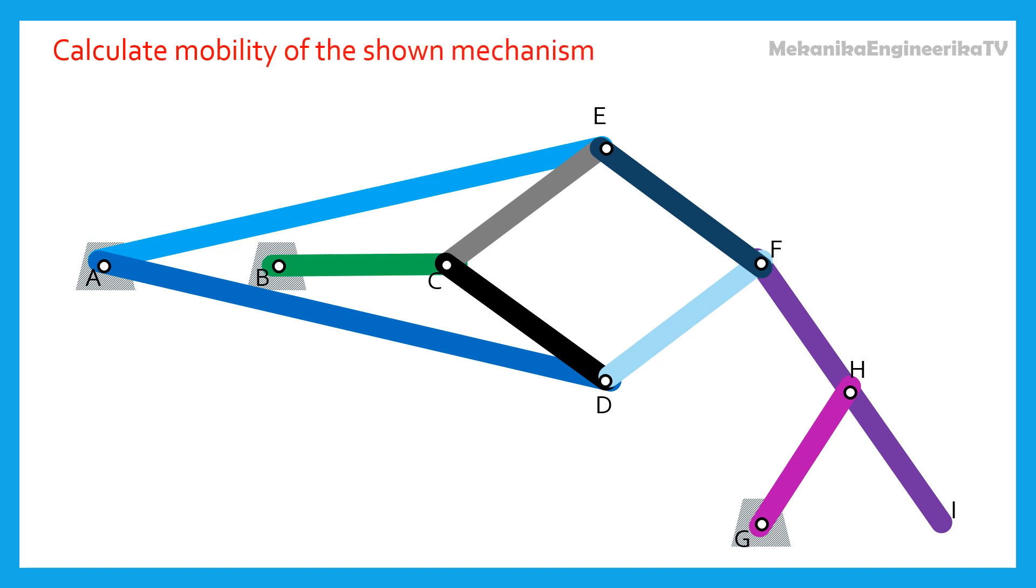The mechanism is built up from 10 links: the ground, bar BC, bar AE, bar AD, bar CE, bar CD, bar EF, bar DF, bar FHI, and bar GH.